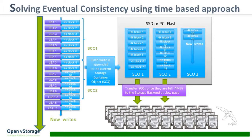How did we solve eventual consistency for Swift? Data comes in from a virtual machine — LBA1, LBA2, LBA3 with 4K blocks. Even when LBAs are overwritten, instead of overwriting in place, we append to a file called a storage container object. We always append until we have a chunk of data — typically between 4 MB and 128 MB. This turns any random I/O into sequential I/O, which is perfect for object stores. Random I/O on an object store is a nightmare; sequential I/O is what they're made for — storing large files like video.